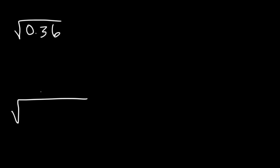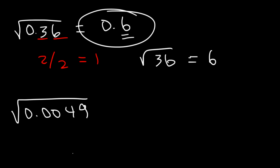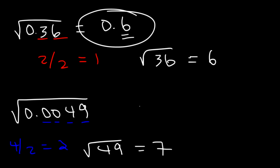Try these two: the square root of 0.36 and the square root of 0.0049. So 0.36 contains 2 digits, and 2 divided by 2 is 1, so the final answer should have 1 digit to the right of the decimal point. The square root of 36 is 6, so the square root of 0.36 is going to be 0.6. Now, the square root of 49 is 7, and this number has 4 digits. 4 divided by 2 is 2, so the final answer has to contain 2 digits, giving us 0.07.